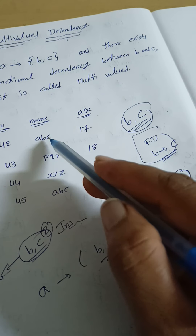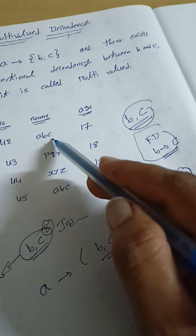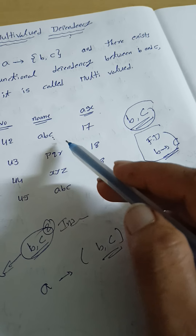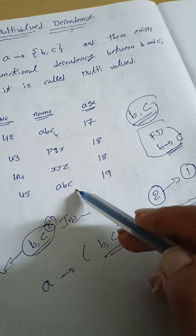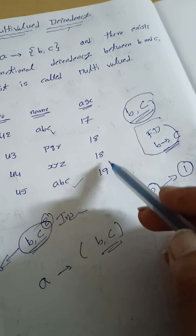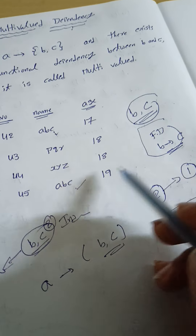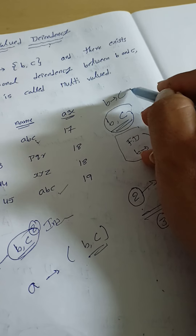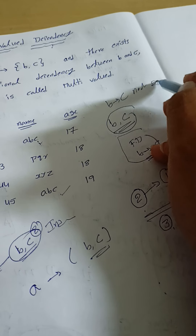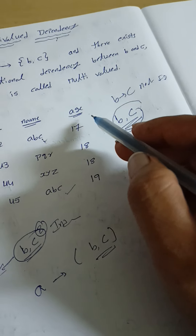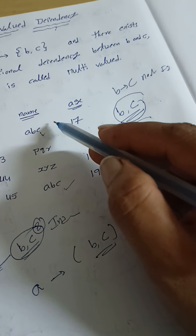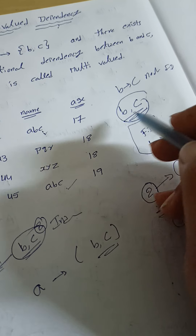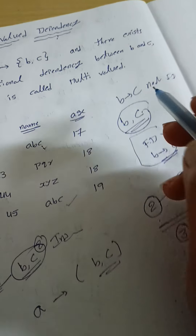Please observe: with the help of B, for a given name A, B, C we have two different ages. That's why B and C are not functionally dependent. So B implies C is not a functional dependency, because here for the name A, B, C we have two different ages. That's why this is not functional dependency.